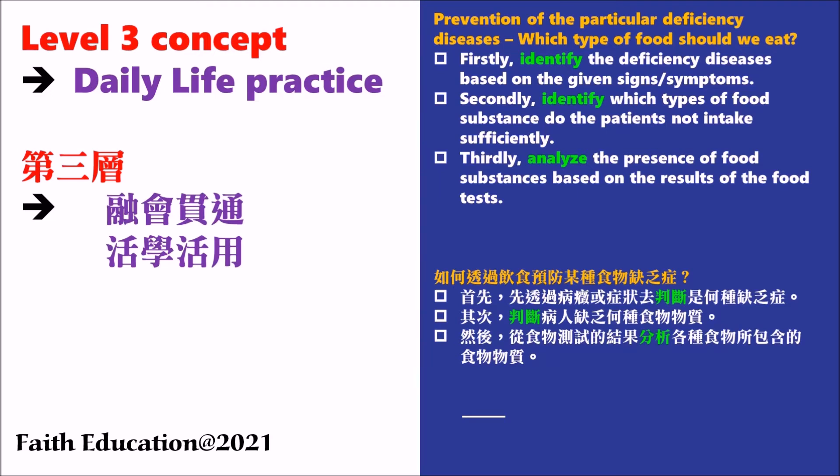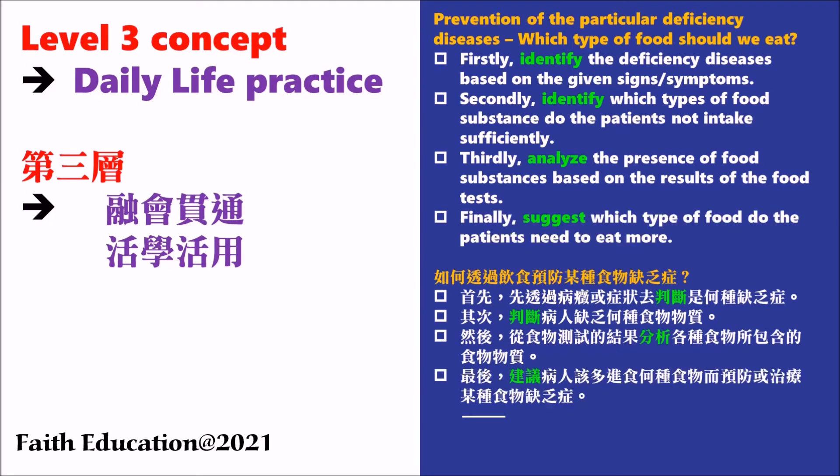For example, in front of us there are food samples A, B, C, and D, and we find that food sample B contains a lot of vitamin C. Based on the first and second steps, we know the patient has bleeding gums or very slow wound healing. So we determine the patient suffers from scurvy. Therefore, we suggest the patient eat more of food substance B, which contains a lot of vitamin C, in order to cure or prevent the deficiency disease scurvy.